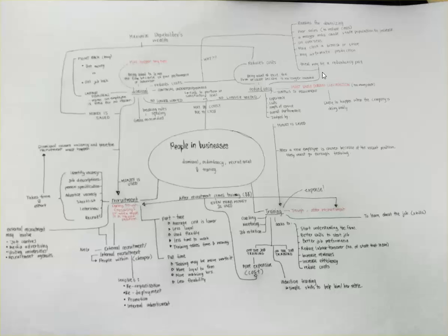When there is automation, there will be less need to employ or train, which reduces the costs and so maximizes the shareholders' wealth. This should happen while the company is doing well because it may cost a lot in the instance.